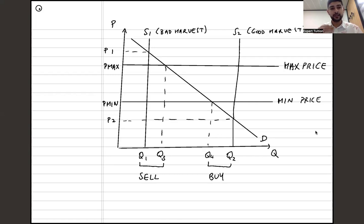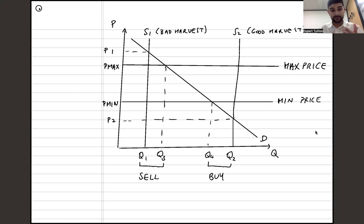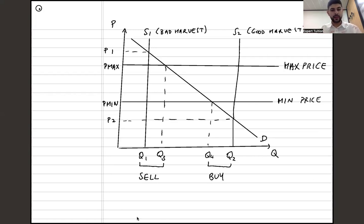The last key evaluation: why buffer stock schemes tend to fail. If there's a good harvest you buy, a bad harvest you sell — but what if there are successive bad harvests? You sell, sell, sell, and you could simply run out of stock. It doesn't always alternate good-bad-good-bad, so if you have successive bad harvests, you run out of stock to sell, you have no influence over the market price, and the scheme is a complete failure.